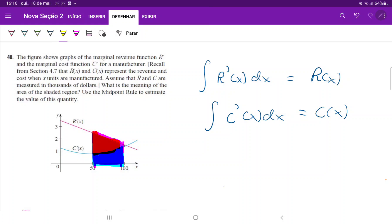because the integral is the area beneath the curve. So we're going to write here that shaded region is r of x minus c of x.